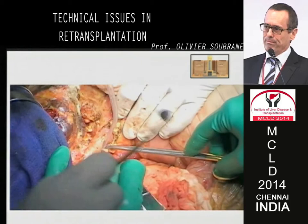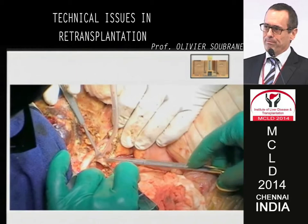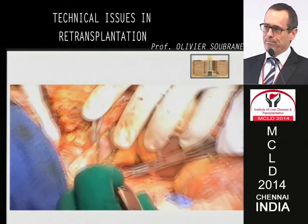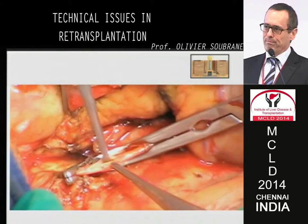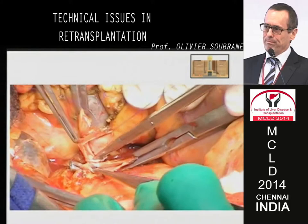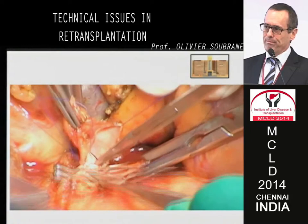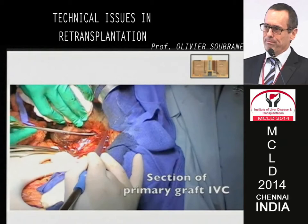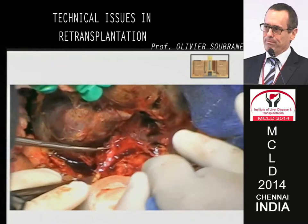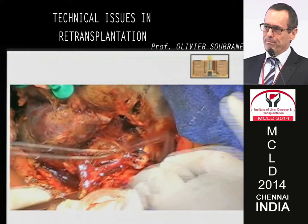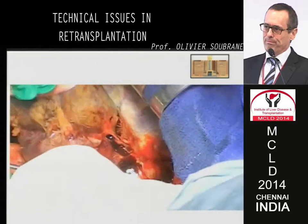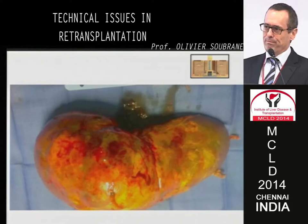Then the dissection of the portal vein — you can see there is some thick sheath here. You must be very careful not to open the portal vein; it looks fibrotic but it's fragile. Here there is a clamp on the IVC, which is opened to perform a temporary portal-caval shunt, which is very useful to complete the dissection of the liver and to have good portal drainage and no venous congestion. Here is a clamp on the vena cava, with blood in the liver being removed.